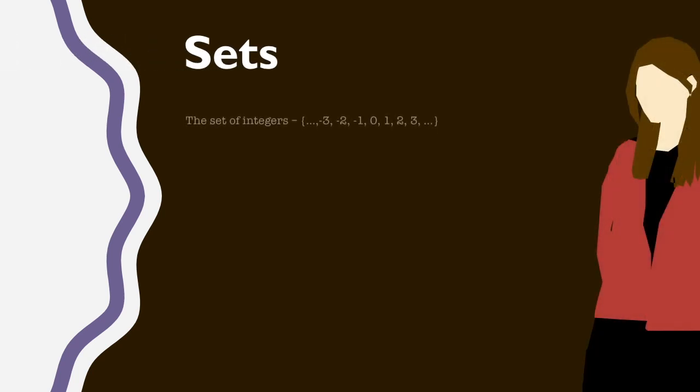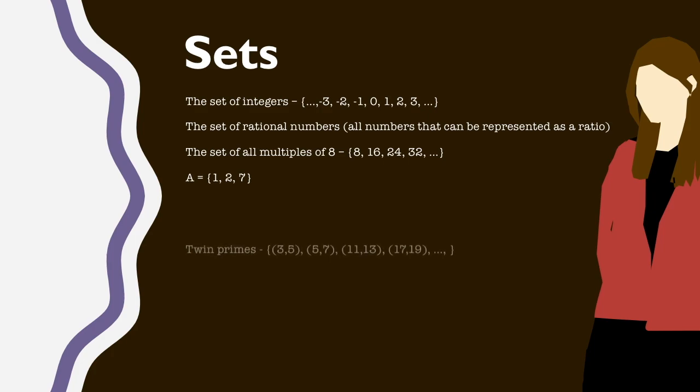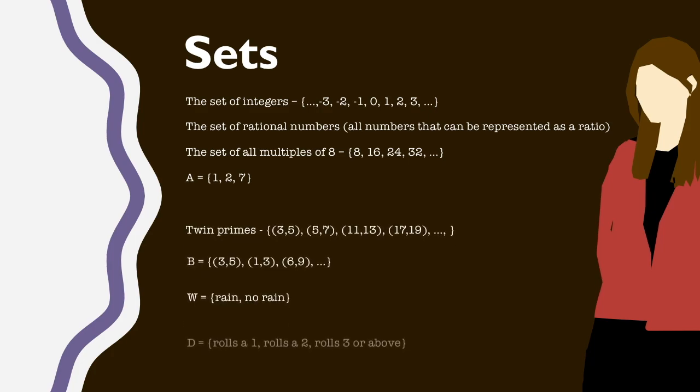In mathematics, we can call any collection of objects, a set of numbers, a set of pairs, or in probability we can think of a set of outcomes or events, a set. And we can use curly brackets to list the items in the set.